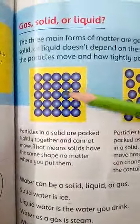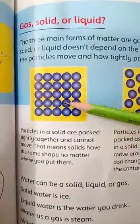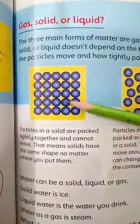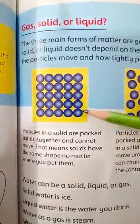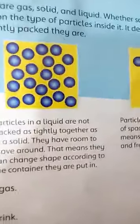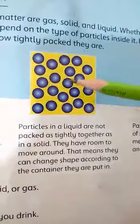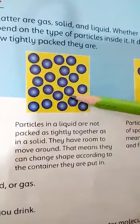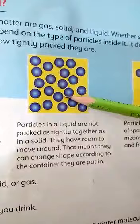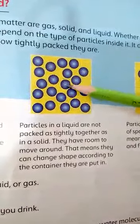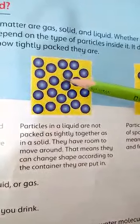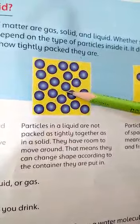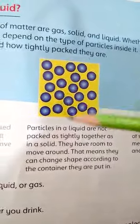In a solid, particles are packed tightly together and cannot move. This means that solids have a definite shape no matter where you put them. In a liquid, the particles are not packed as tightly together as in a solid — they have room to move around.